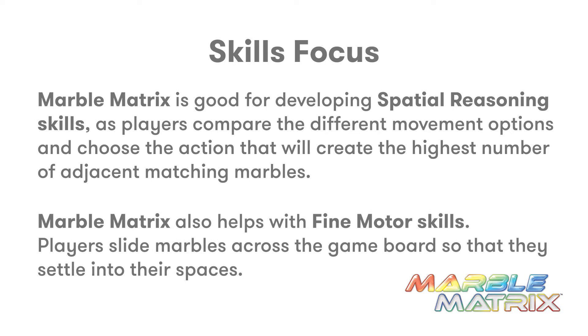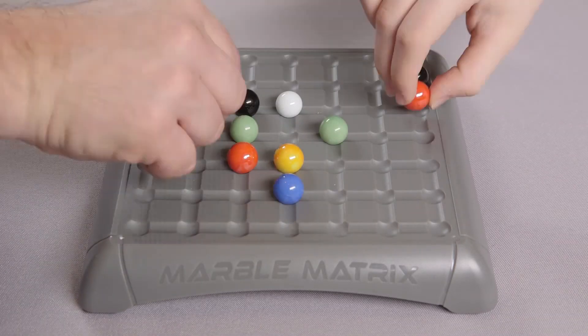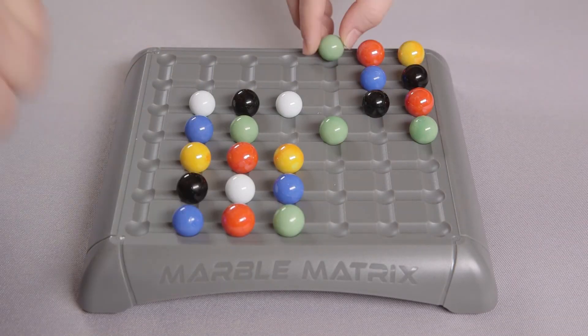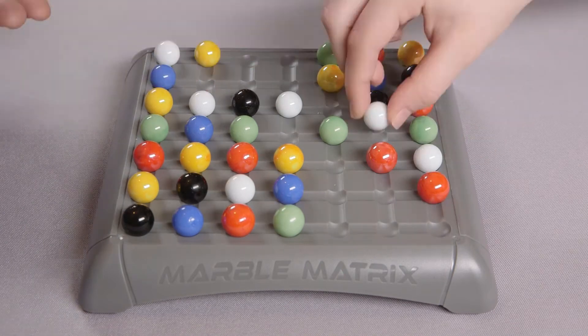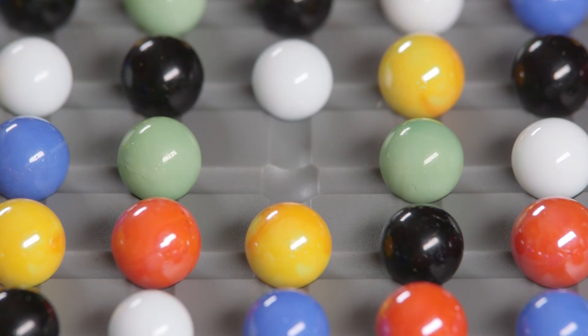Players slide marbles across the game board so that they settle into their spaces. Place the Marble Matrix game board in the center of the play area. Randomly place all the marbles on the game board so that no two marbles of the same color are next to one another, either horizontally or vertically. Leave the center space empty.